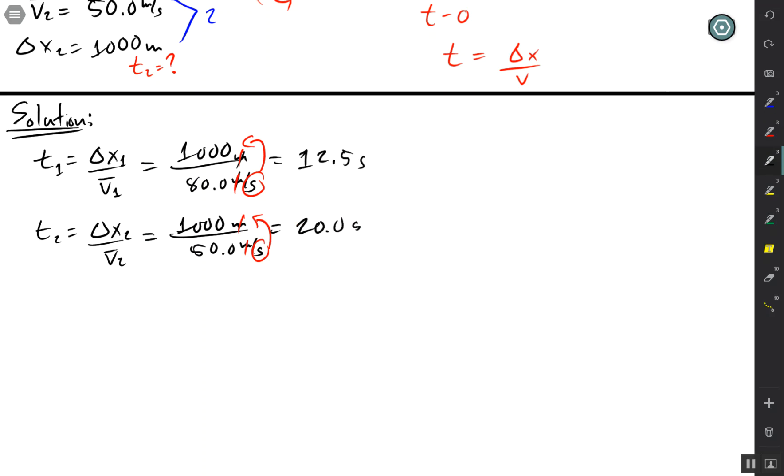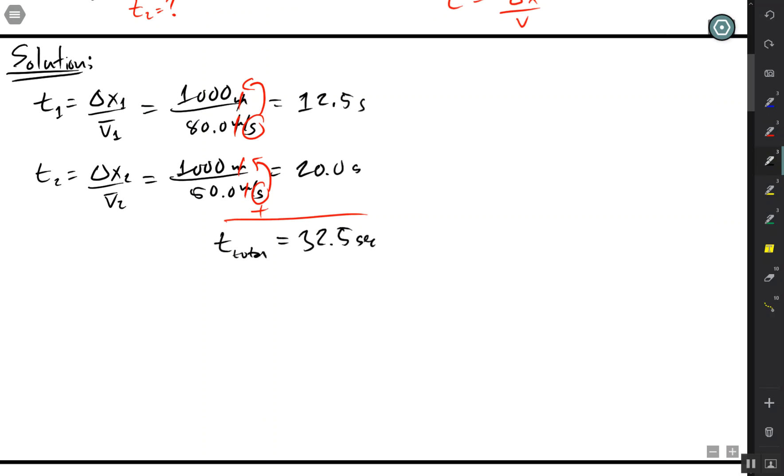And then I just find the total time. I'm just going to add that down there just to give us the t total. That'll give us 32.5 seconds. So now with this total, this is not what I'm looking for, but it'll help me to find what I'm looking for. The average velocity of the total or the entire trip is the delta x total over the time total.